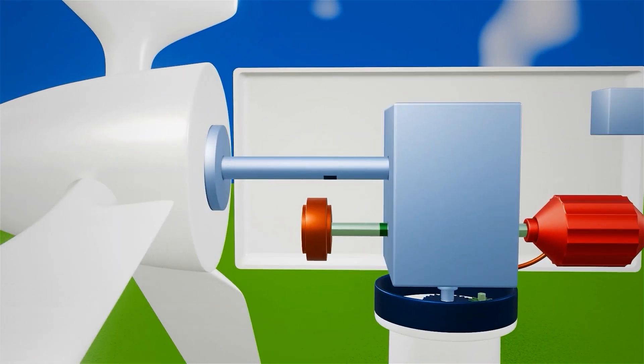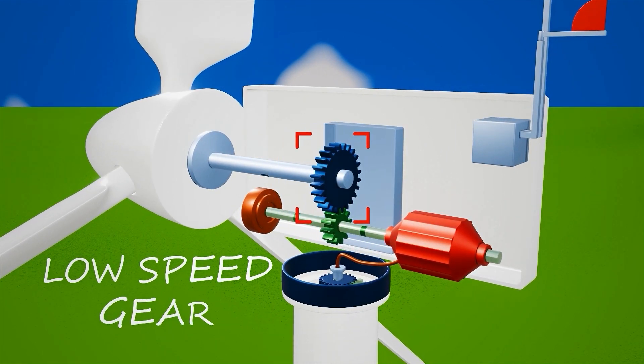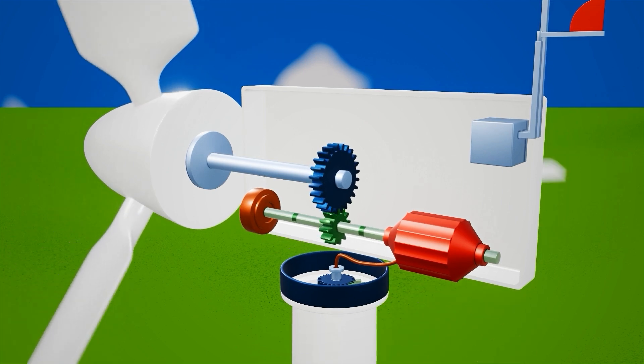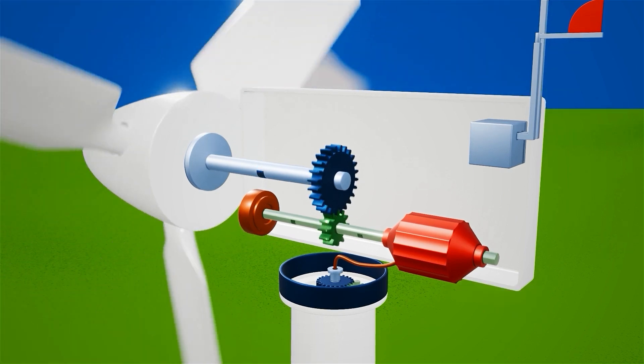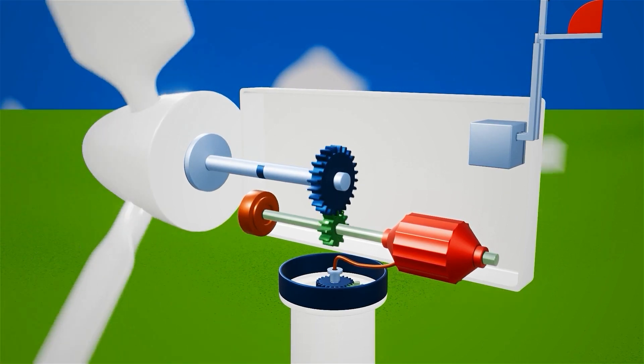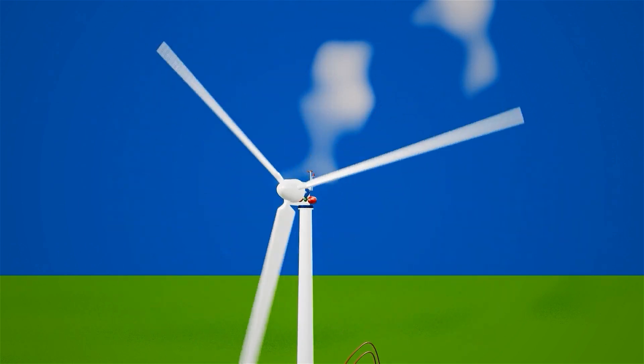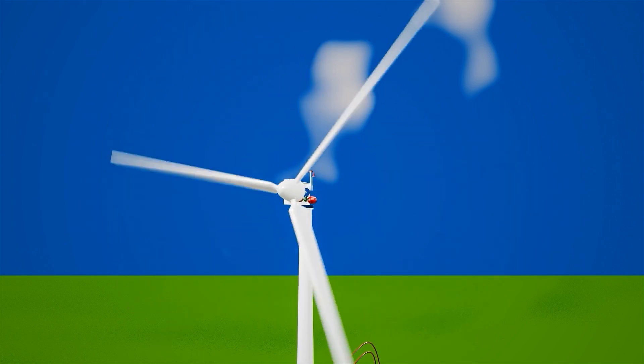The rotor is linked to the gearbox via the low-speed shaft. Inside the gearbox, there's a low-speed gear that's connected to the low-speed shaft. As the blades rotate, the rotor, low-speed shaft, and low-speed gear also rotate. The rotational speed of the turbine blades typically ranges from 15 to 40 rpm, which is inadequate for electricity generation.